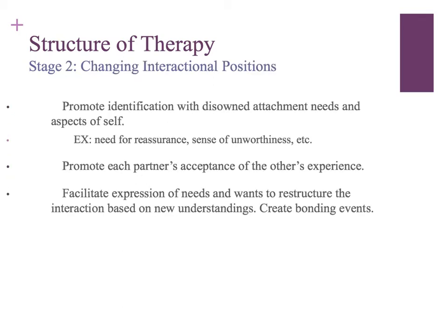The second stage is about changing some of those interactional patterns and positions. The EFT therapist works to get each partner to identify disowned attachment needs — those underlying emotions that are not being expressed and that somebody may think they're not able to express. For example, somebody may feel comfortable expressing anger but not comfortable expressing fear. The EFT therapist works to get at that avoided emotion, help each partner feel comfortable expressing that part of themselves, and then help the other partner hold and accept that experience so that a new relational experience occurs.